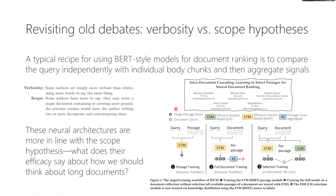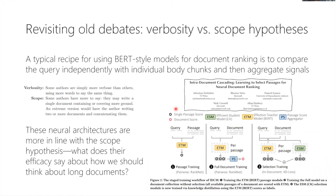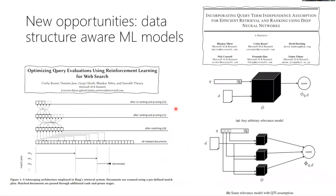Deep learning can bring new capabilities for IR: gradient descent-based optimization is a powerful tool for optimizing new tasks. For example, for stochastic ranking and expected exposure-based metrics, gradient-based optimization could enable training models that don't assume a static ranking — instead sampling multiple rankings during training, computing metrics on each, and devising a loss function on top. Data structure-aware models are another exciting direction: thinking about query term independence for inverted index compatibility, or even using reinforcement learning at a very low level to decide how to scan documents during first-stage candidate generation.